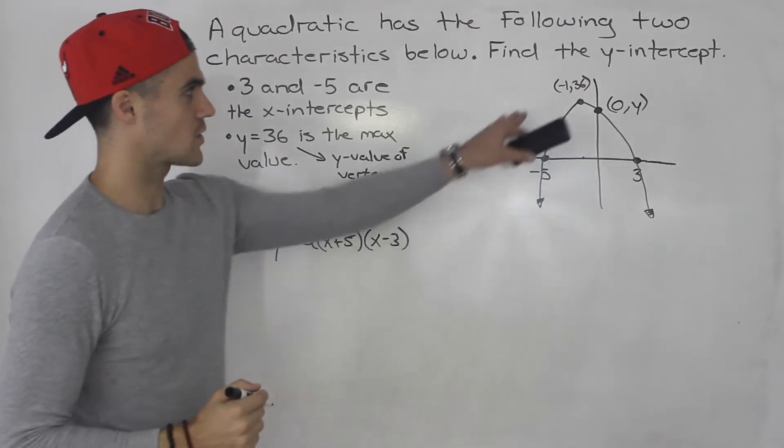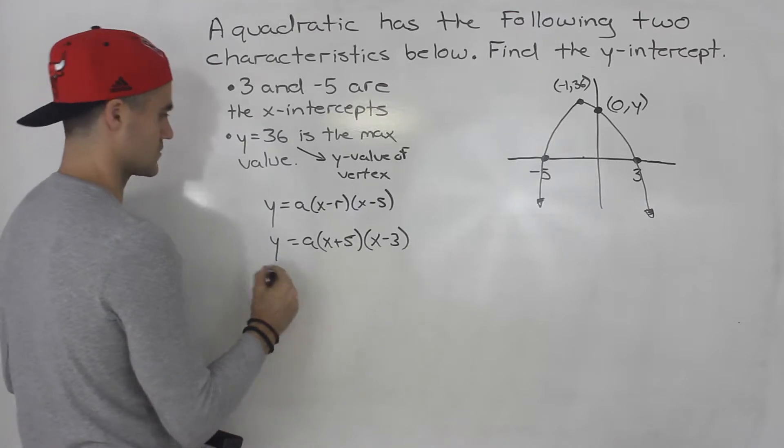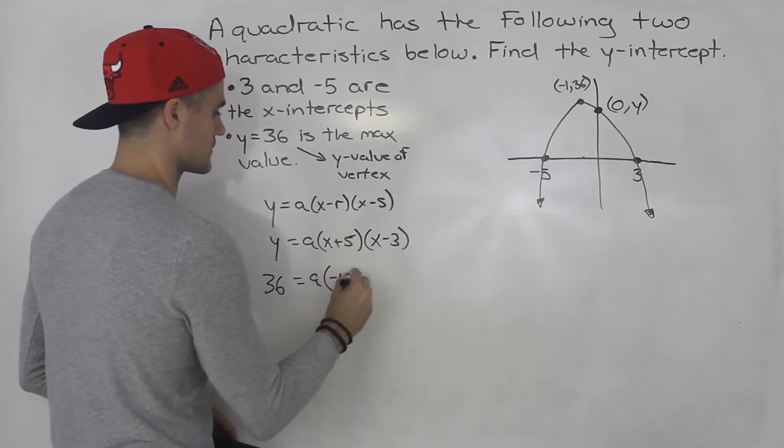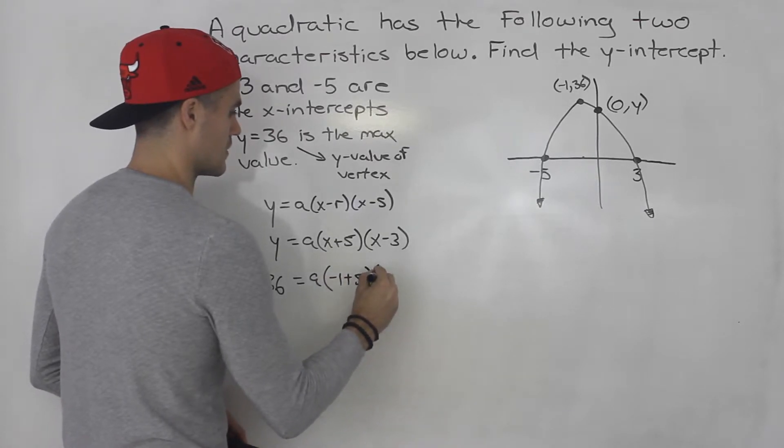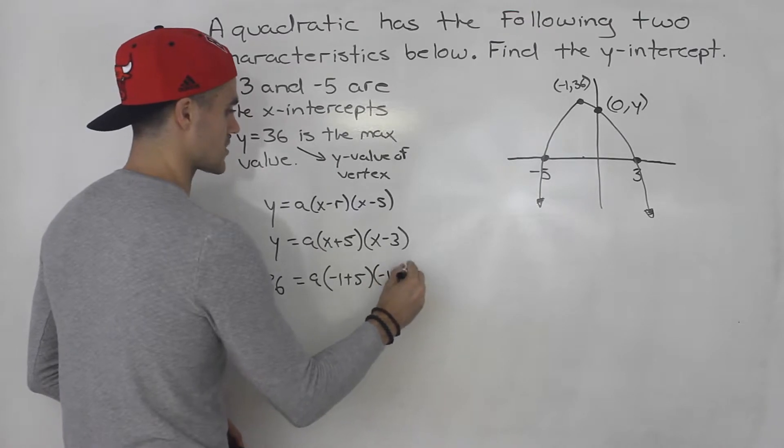And then we could plug in this coordinate negative 1 and 36 for x and y and solve for the a value. So, we would put 36 for y, and the a value would be negative 1 plus 5. This bracket would be negative 1 plus 5, and this would be negative 1 minus 3.